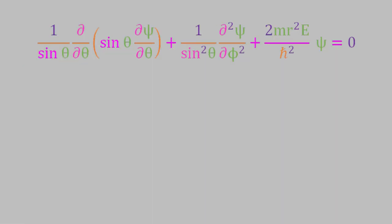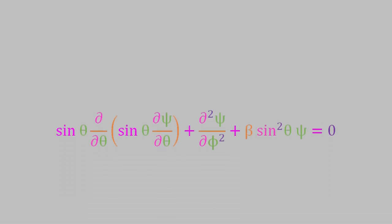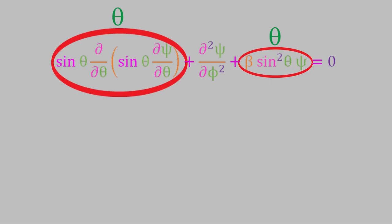Meanwhile, the fraction in front of psi in the last term is entirely made of constants. We can make that term look simpler by combining all those constants into one big constant called beta. Next, we can get rid of some of the fractions in the equation by multiplying everything by the square of sin theta. That gives us this expression. Now, let's look carefully at what's left. The remaining equation contains only two variables, theta and phi. And you might notice that the first and third terms contain only the variable theta, while the middle term contains only phi. That's actually the key that will allow us to solve this equation.